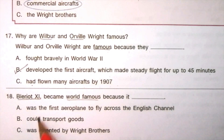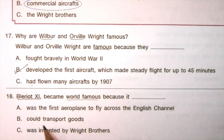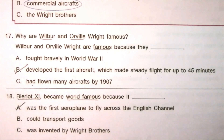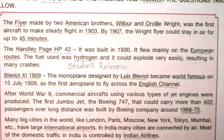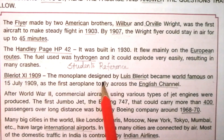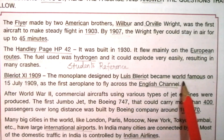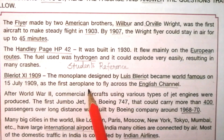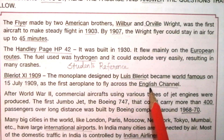Question 18: Blériot XI became world famous because it was A) the first aeroplane to fly across the English Channel; B) it transported goods and was invented by the Wright Brothers. The answer is A. The answer is given in the passage: the monoplane designed by Louis Blériot became world famous on 15 July 1909 as the first aeroplane to fly across the English Channel.